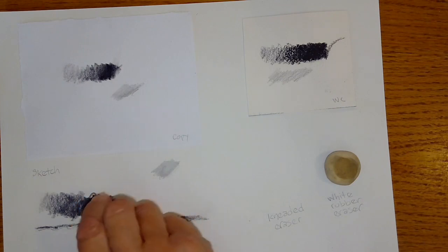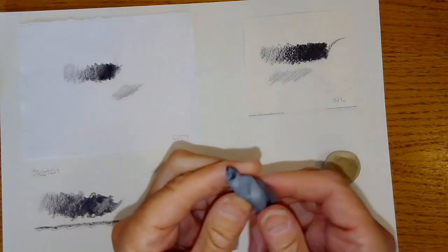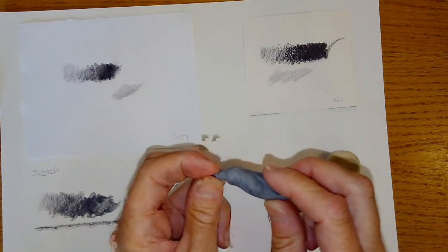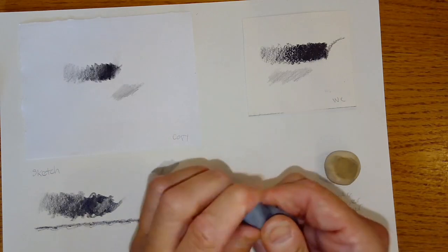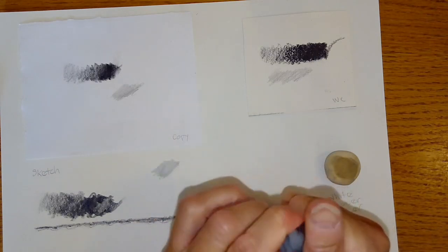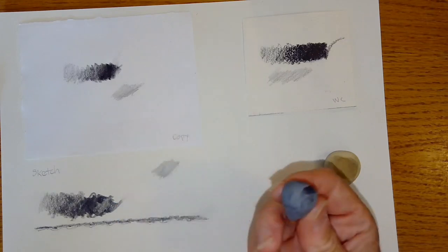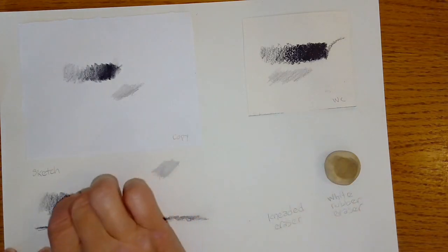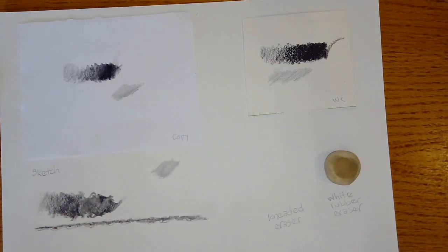Really what you want to use this for is lightening up. And the best thing is you can twist it to make little areas to work on small areas of lifting graphite, or you can shape it to whatever size you want, like a stump maybe, to get larger areas. See, that takes it away quite nicely.